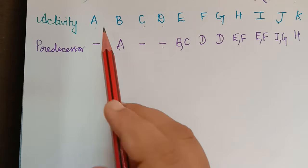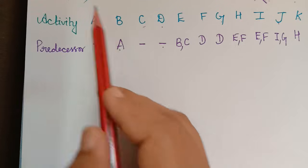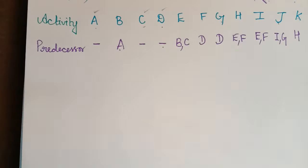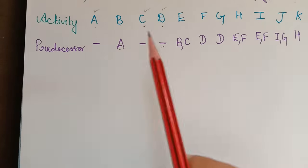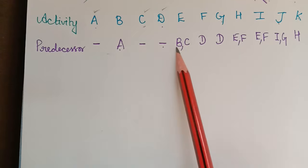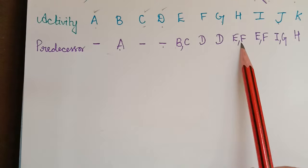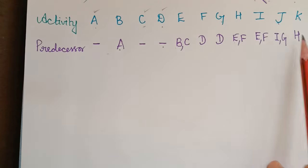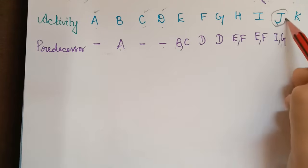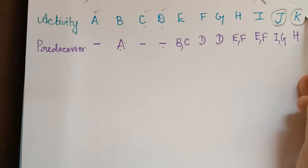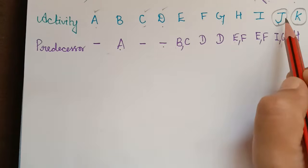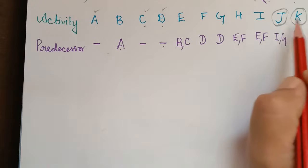The initial activities are A, C, and D. For the end activities, we check the predecessor list — A, B, C, D, E, F, G, H, and I all appear, but J and K do not. So J and K will be the end activities, as they have no successors.